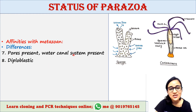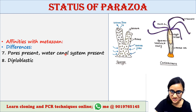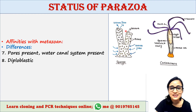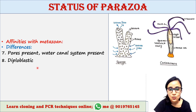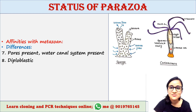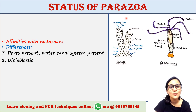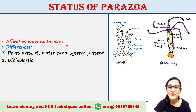The body of sponges is perforated by multiple pores and they have a unique water canal system, which is absent in Metazoa. Sponges are diploblastic — having only ectoderm and endoderm, without mesoderm — whereas Metazoa are triploblastic (coelenterates being the exception, as they are also diploblastic). Due to these differences, Parazoa are neither grouped with Protozoa nor Metazoa; therefore, a separate phylum Porifera has been created for sponges.